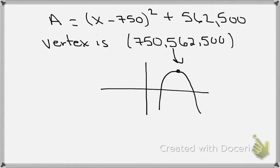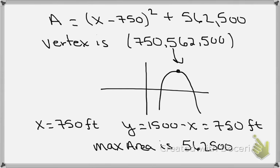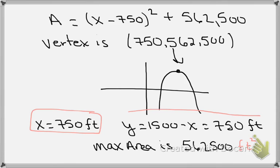Drawing the parabola, the vertex is in the first quadrant as expected, since both coordinates are positive. So x equals 750 feet; and since y equals 1,500 minus x, y also equals 750 feet. The maximum area is 562,500 square feet. Notice that since both x and y are exactly the same, this is not just any rectangle — it's actually a square.